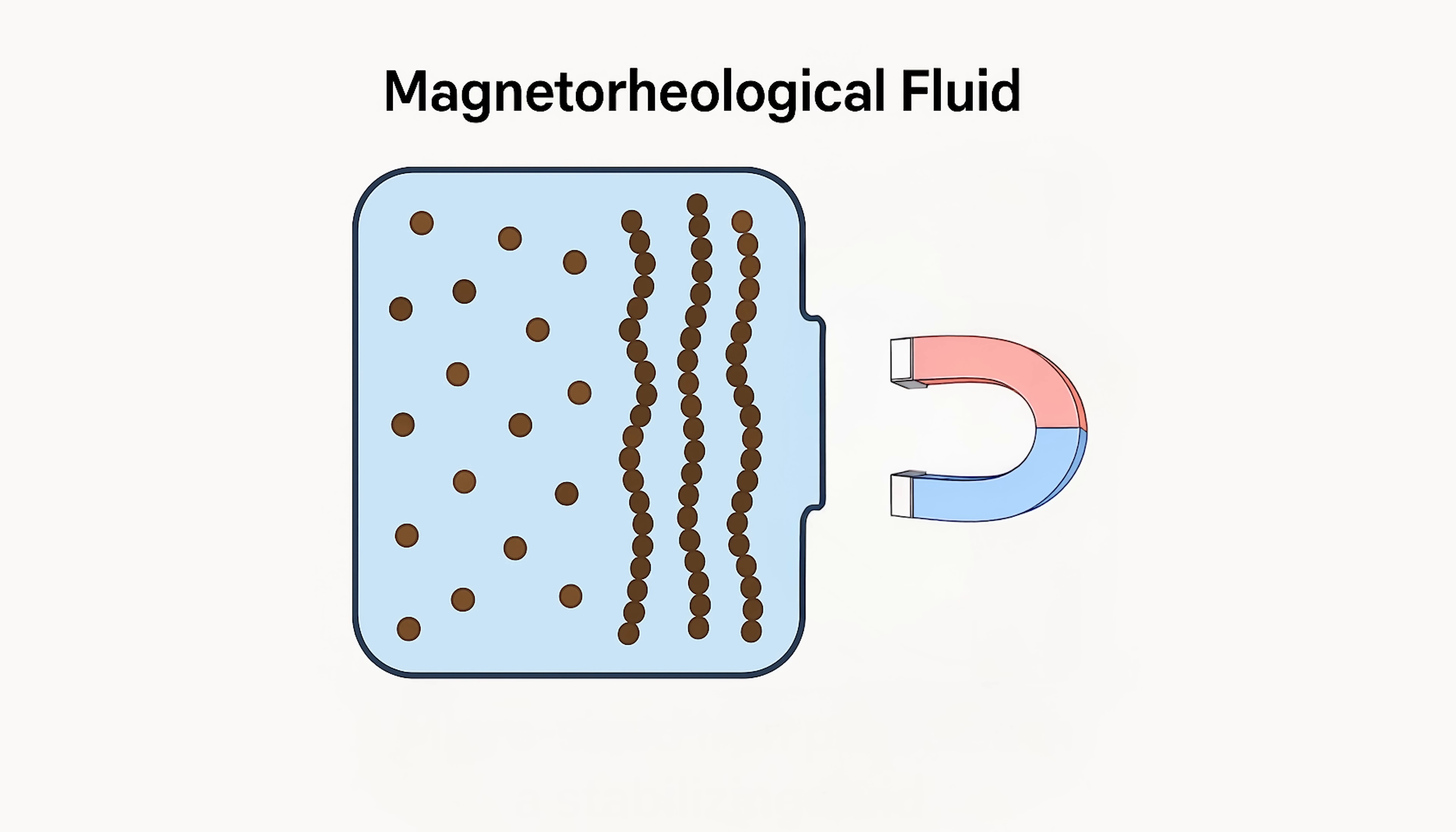So this is exactly how the magnetorheological fluid is working. We have micro-sized iron particles in a stabilizing fluid. And when we put this fluid in a magnetic field, the particles in the fluid form chains that become stronger and longer when the magnetic field gets stronger. So this directly affects the fluid's viscosity.